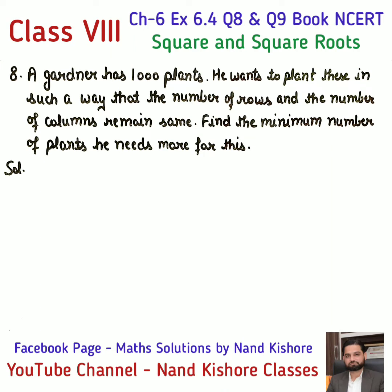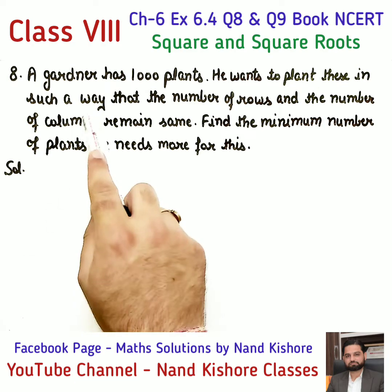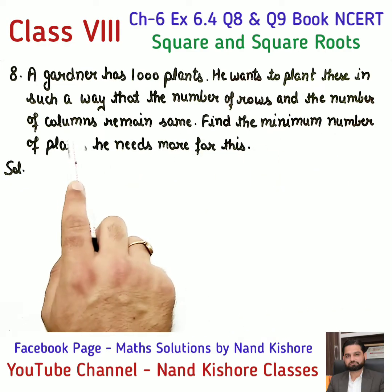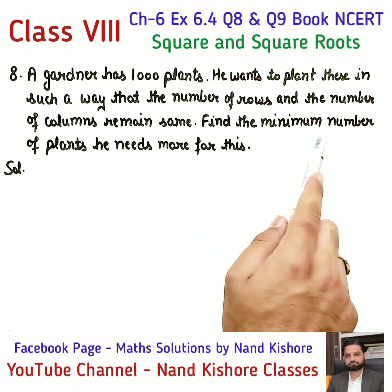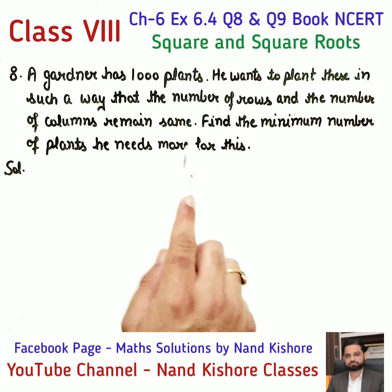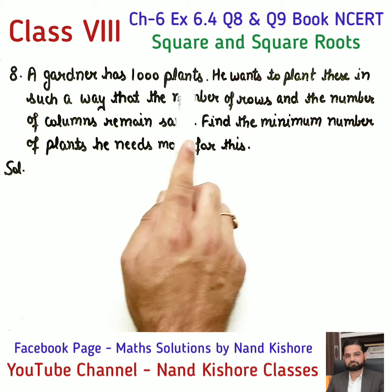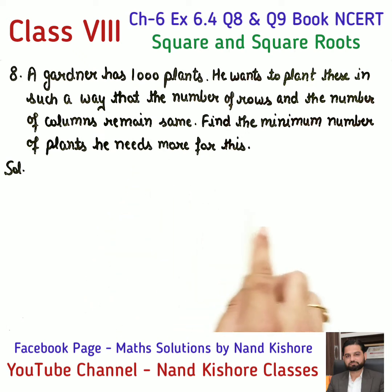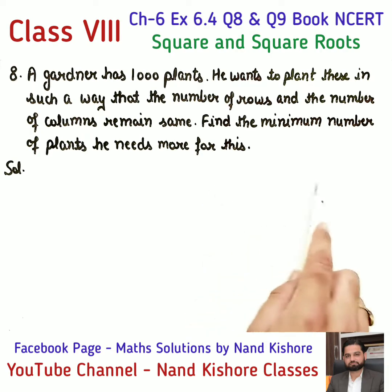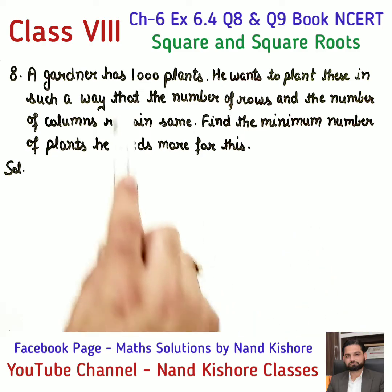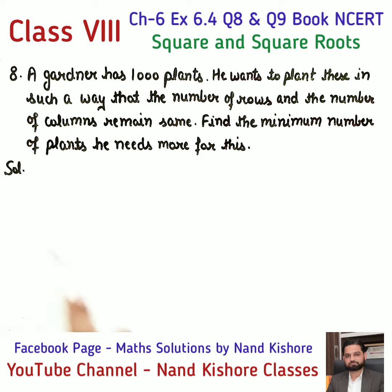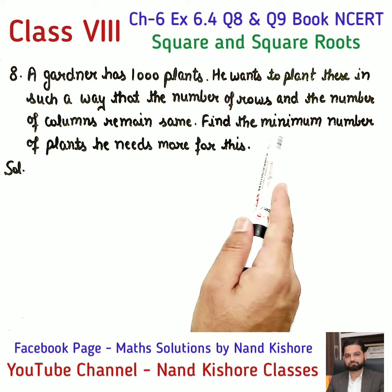Hello students, we are going to continue Exercise 6.4, question number 8. Read the statement carefully: a gardener has 1000 plants. He wants to plant these in such a way that the number of rows and the number of columns remain the same. Find the minimum number of plants he needs more for this. He wants to make a square arrangement, but 1000 is not a perfect square.